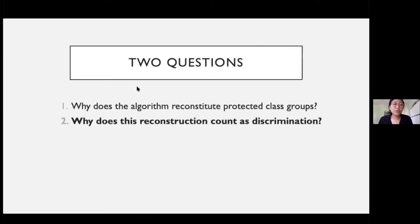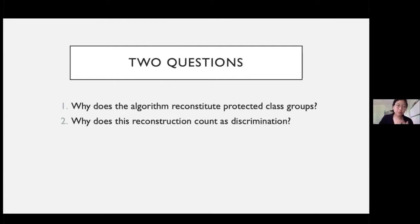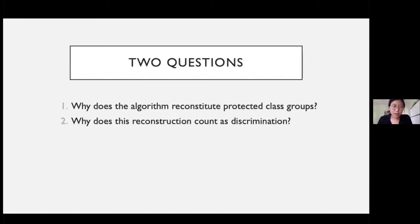I want to focus on two questions here. First, why does the algorithm reconstitute these protected class groups? Some simple sociological observations and observations about how machine learning works make this quite clear: there are sociological facts about what kinds of pages certain groups tend to like and click on, and as long as those behavioral tendencies are true in the world, the machine learning system will learn them. I think this first question can be set aside.